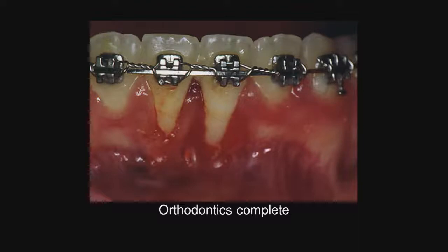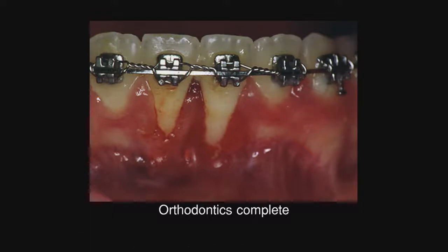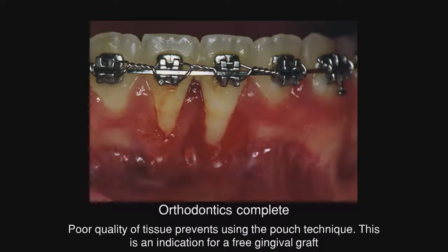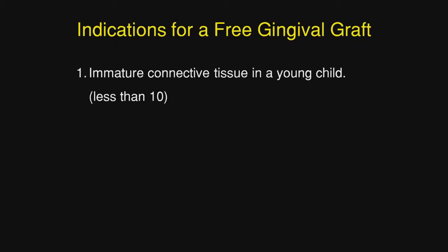In this situation, orthodontics is complete, but look at the inflamed tissue in the papilla area on these two central incisors. There is no way you could flap that area to place a connective tissue graft in a pouch. The only option here is a free gingival graft, and that is one of the indications for the free gingival graft.